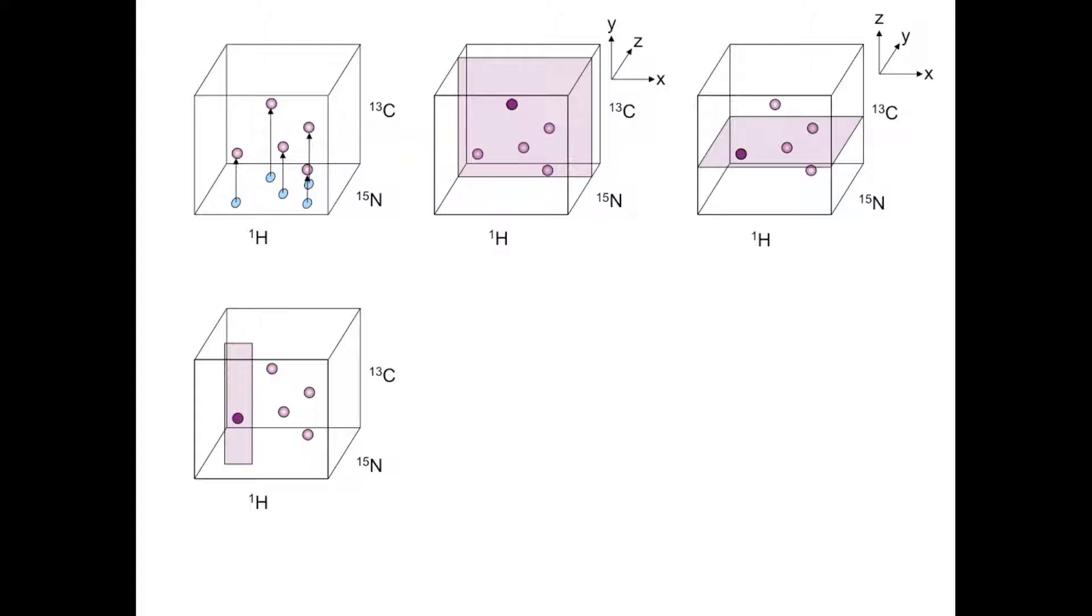If you take several such strips, you can extract them out of the 3D cube and lay them next to one another. Note that while these strips share the carbon-13 y-axis, each strip has its own unique 1H and 15N position along the x and z-axis.